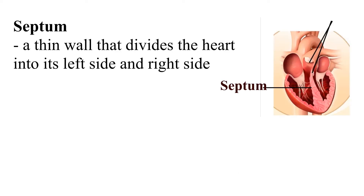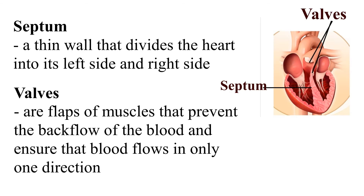The Septum is a thin wall that divides the heart into its left side and right side. Valves are flaps of muscles that prevent the backflow of blood and ensure that blood flows in only one direction.